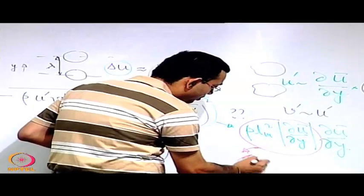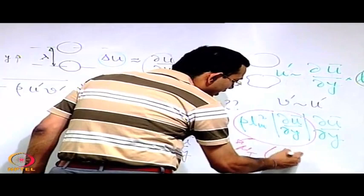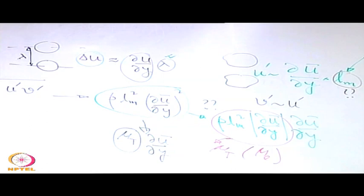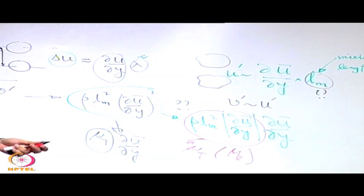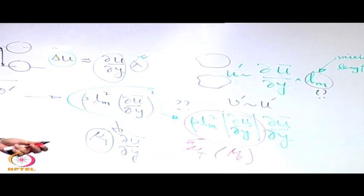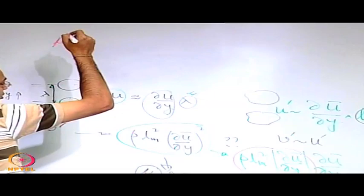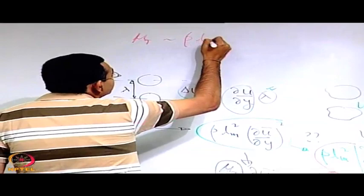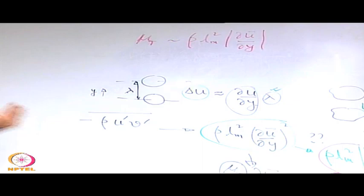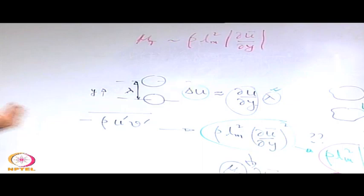This becomes the turbulent viscosity mu_t — sometimes also called eddy viscosity mu_e — and the name is very clear because it arises from the interaction between fluctuating velocity components of eddies. The summary of Prandtl's initial work is that mu_t, or the eddy viscosity, is related in this way. Sometimes a sort of kinematic eddy viscosity is also considered, written as mu_t divided by rho.